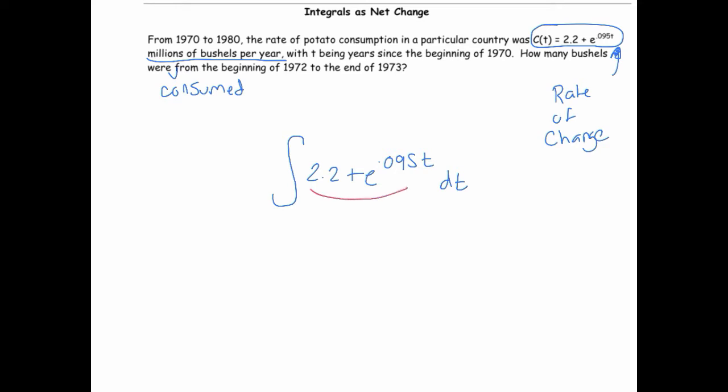So the units on this we know are millions of bushels per year. So I'm just going to put bushels per year. And then this change in time is going to be years. And so those cancel, and you'll be summing up bushels. So it makes sense to place that function right into the integral.